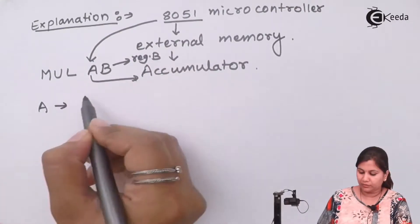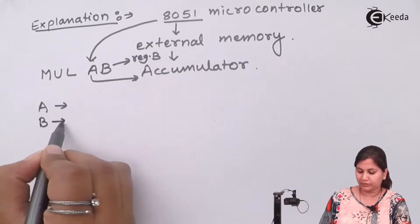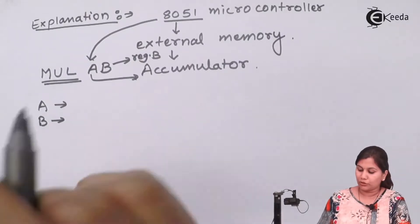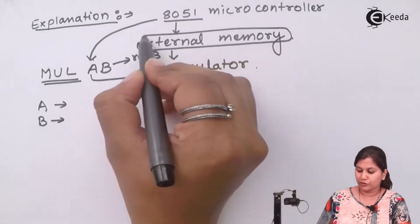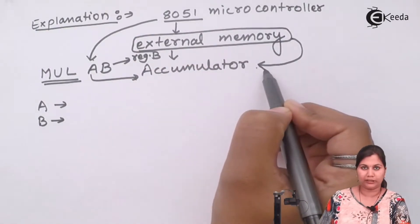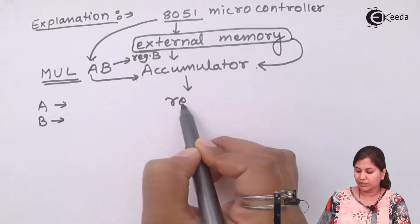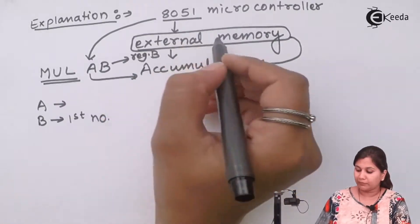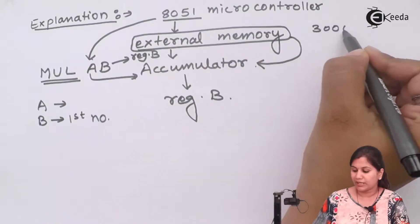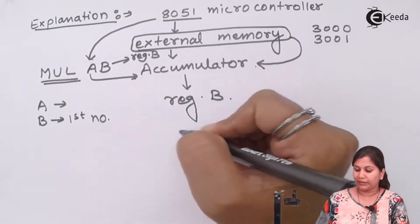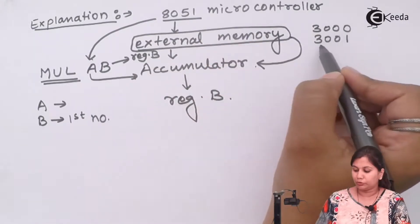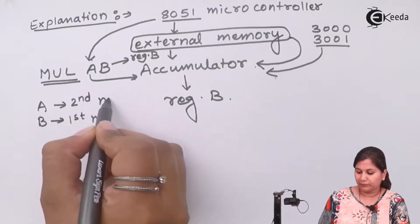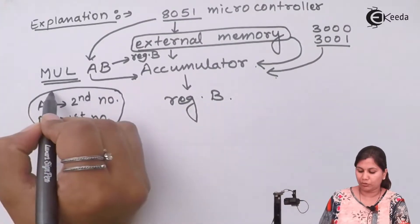One number should be in the accumulator and the other in register B — only then can we use the MUL AB instruction. We will first shift the first number from external memory to the accumulator, then move it from the accumulator to register B. Then the second number, which is at memory location 3001H, will be loaded into the accumulator.